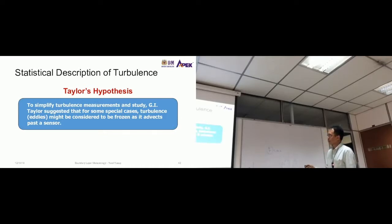He suggested that for some special cases, turbulence or eddies might be considered to be frozen as it advects past the sensor. So that is Taylor's hypothesis. We assume certain things about turbulence so that we can describe it statistically, or else it's too random for us to study it.